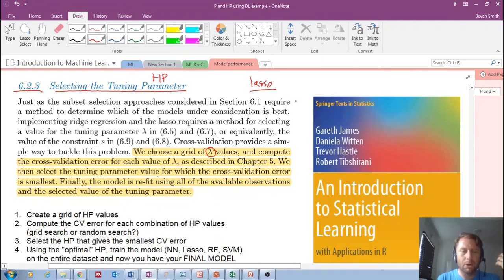How do we select a tuning hyper parameter? Number one: we choose a grid of lambda values. In my own words, create a grid of hyper parameter values. In this case, it's a single value, so you're going to have lambda equals a range of values from a minimum to a maximum—a single list of lambda values.